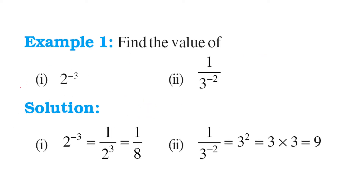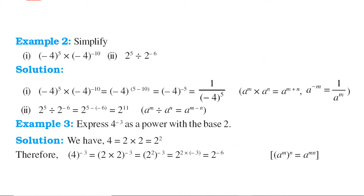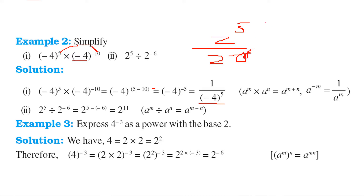We have to find the value of these expressions. This is simply 1 by 2 to the power 3, that is 1 by 8. This one: 3 squared is 9. To simplify minus 4 to the power 5 times minus 4 to the power minus 10 — same base, so 5 plus minus 10 is minus 5, giving minus 4 to the power minus 5, which equals 1 by minus 4 to the power 5. Here, 2 to the power 5 divided by 2 to the power minus 6 — same base, so 5 minus of minus 6 is 5 plus 6, giving 2 to the power 11.